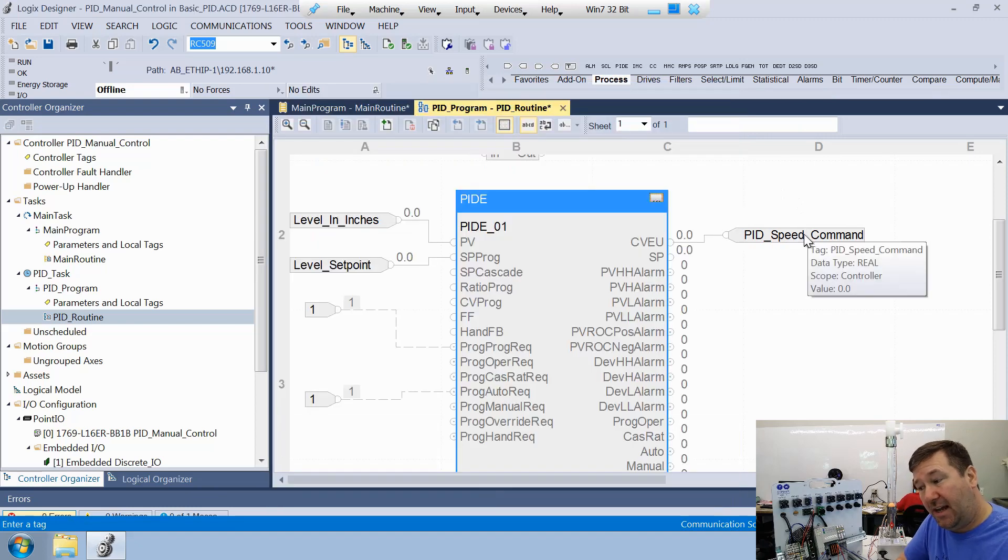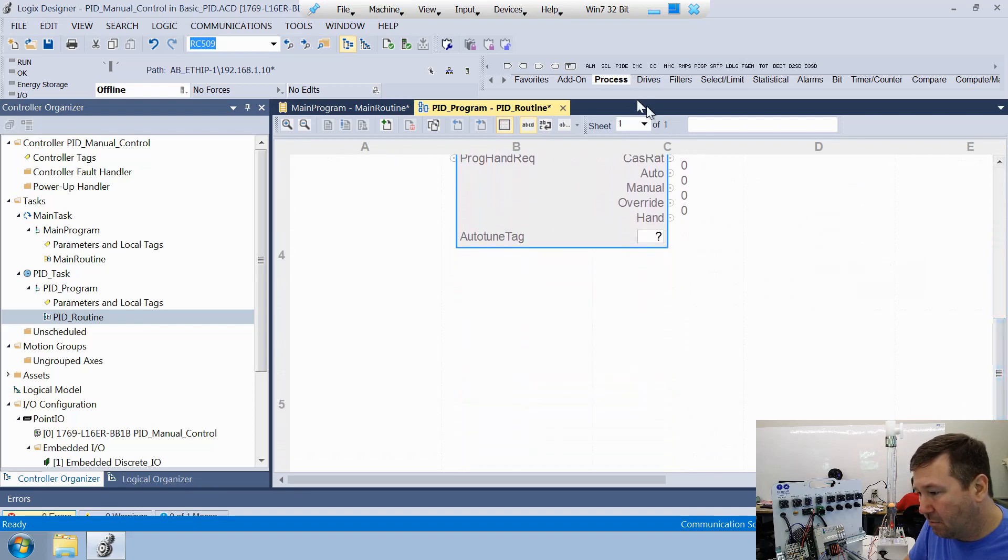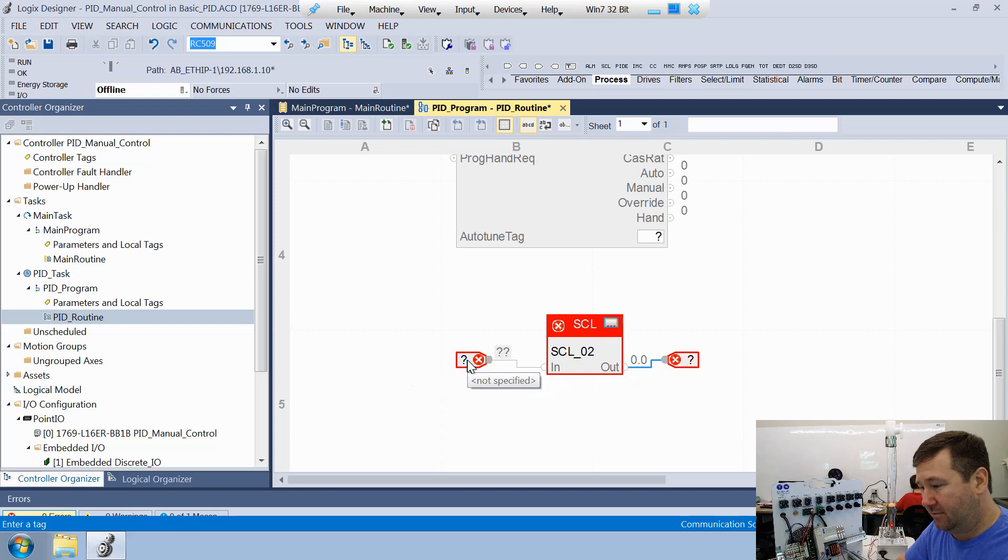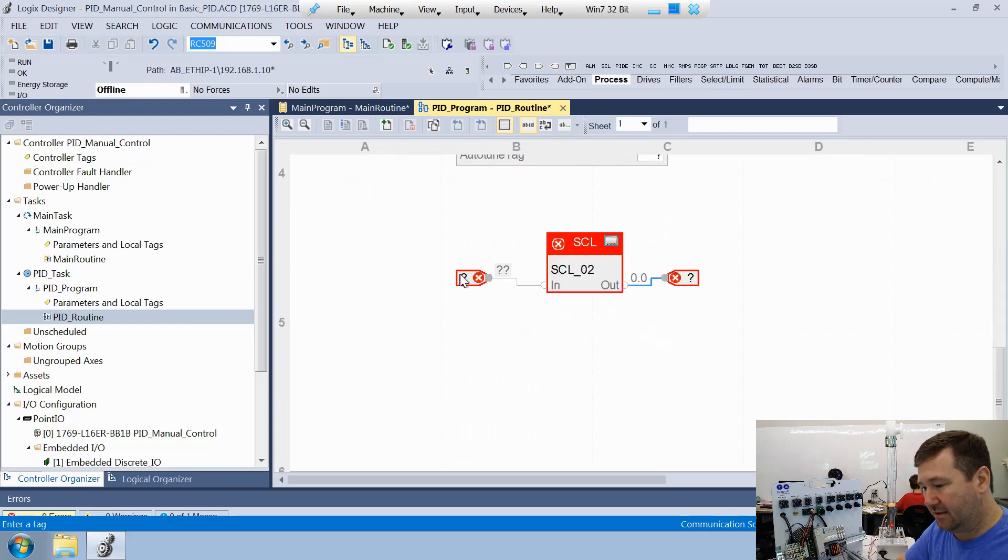And that should get our PID speed command putting out a value, but this is just a tag. So we do have one final step where we need to take that speed command and put it to that drive speed output. So we're going to add another scale instruction. We'll bring it down and we're going to grab an input reference and an output reference. And yes, somebody will put in the comments, yeah, I could have just put this drive output right on the PID, but we're going to do some other things later where it's going to become important that we have that little separation point. So we're going to click some connectors and then this will be that PID speed command. That's going to be our input.